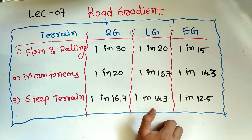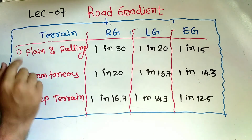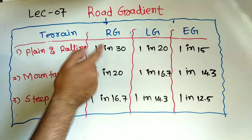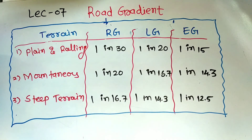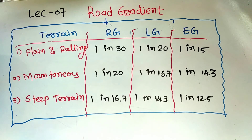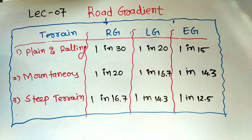For steep terrain, the ruling gradient is 1 in 16.7, limiting gradient is 1 in 14.3, and exceptional gradient is 1 in 12.5. This table is mostly examined — questions can be asked about ruling gradient, limiting gradient, and exceptional gradient values. Remember two things: the definitions of ruling, limiting, and exceptional gradient, and the meaning of 1 in n. I hope you liked this video — thanks for watching.